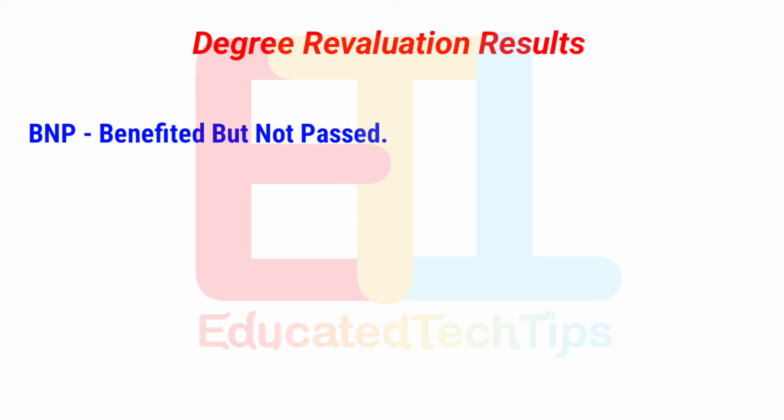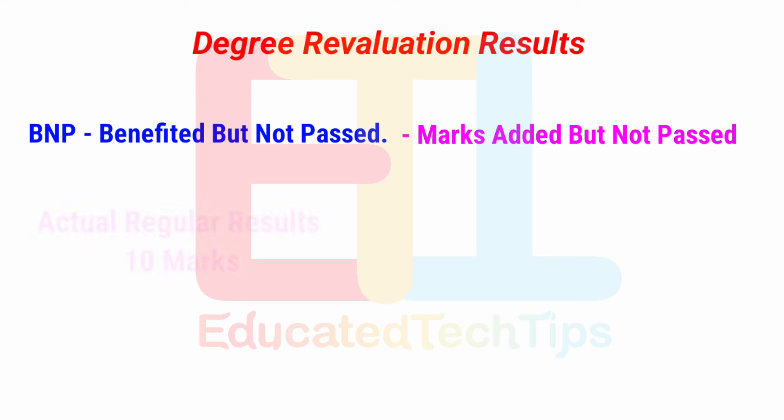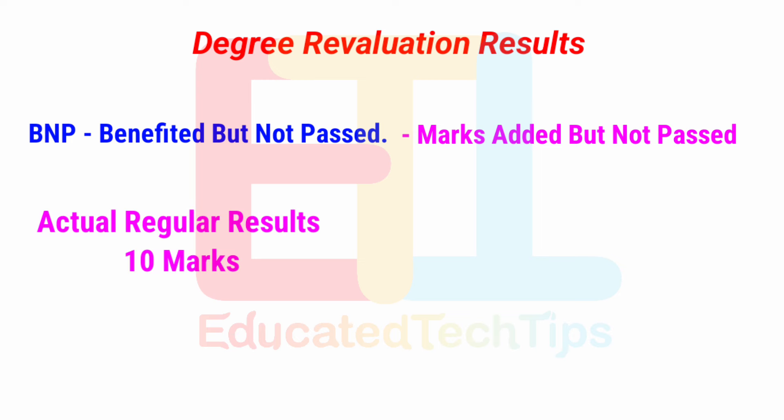First, BNP means 'Benefited but Not Passed.' In revaluation, marks were added to your score, but you still did not reach the pass marks. For example, if you get 10 marks added in revaluation but you still need 15 marks to pass — 10 plus 5 equals 15 — since 15 is not the pass mark, you are benefited but not passed. That is BNP.